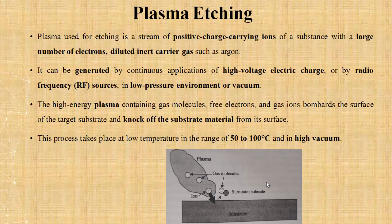Next is plasma etching. Plasma contains positive charge ions, electrons, and gas such as argon — this three-component combination forms plasma. High energy plasma is used to remove the substrate and undesired materials. The process temperature is around 50 to 100 degrees, meaning it is a low-temperature process carried out in high vacuum.